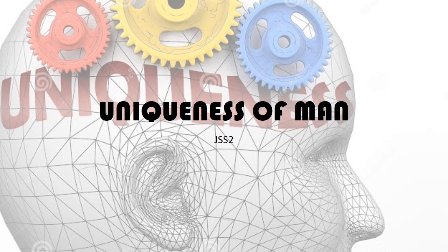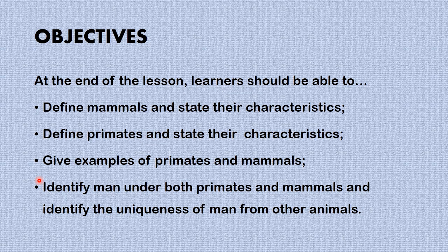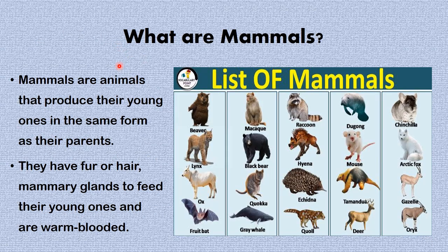Hello there, it's time for another science lesson. Today we'll be looking at the uniqueness of man. At the end of the lesson, learners should be able to define mammals and state their characteristics, define primates and state their characteristics, give examples of primates and mammals, and finally identify man under both primates and mammals and identify the uniqueness of man from other animals.